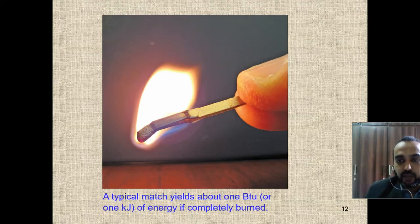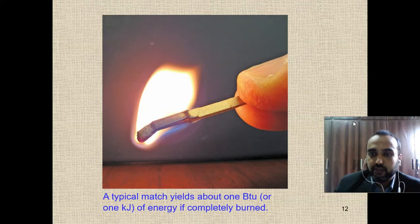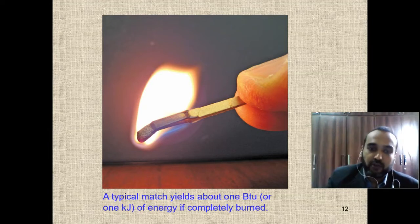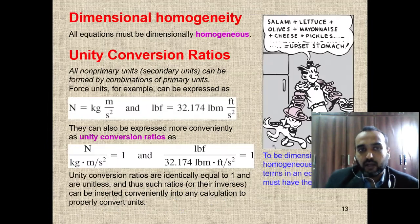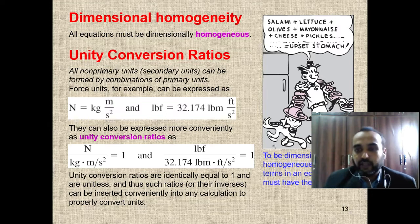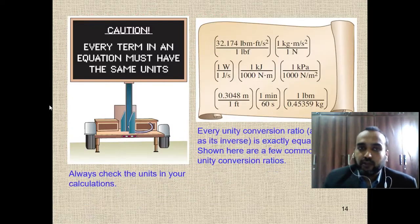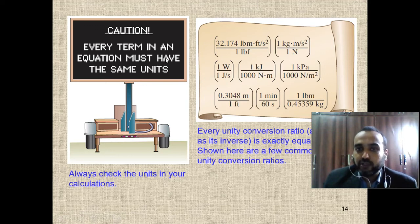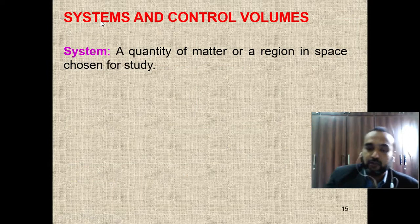A typical match, when burned, generates about one BTU or one kilojoule of energy — so one BTU is almost equal to one kilojoule. Then we have dimensional homogeneity: in any equation, both sides must have the same units. You cannot add apples with mangoes — every term in an equation must have the same units; otherwise you cannot add, subtract, or multiply. It is best to check dimensions before solving any question.